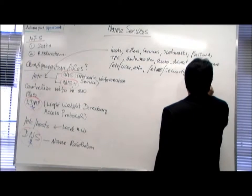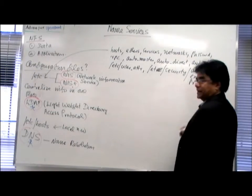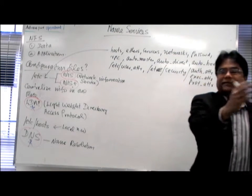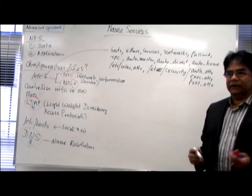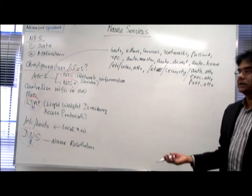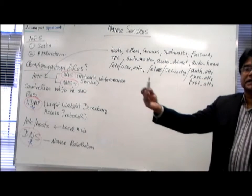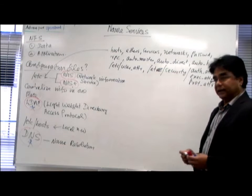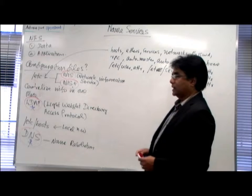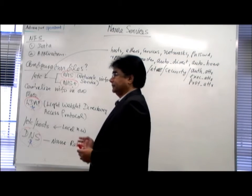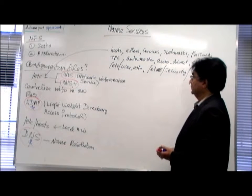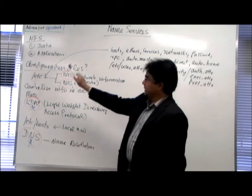All these configuration files can be centralized. Why do you have to have these things in each and every computer in your network? When you have to maintain them, you have to maintain all of them. When you are creating users or creating roles, you have to go to each and every computer and modify. You don't have to do that. All can be in one central place.